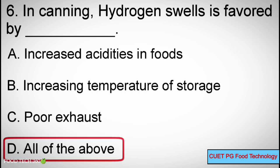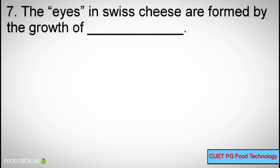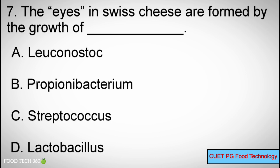Question number 7: The eyes in Swiss cheese are formed by the growth of — Options: A) Leuconostoc, B) Propionibacterium, C) Streptococcus, D) Lactobacillus. Correct answer: B) Propionibacterium.